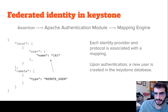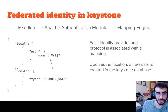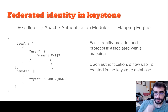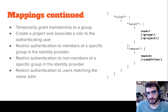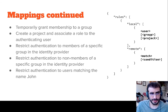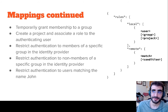Upon authentication, a new user is created in the Keystone database. We can see a form of a mapping which translates the remote user attribute into the name of the user. Mappings allow operators to do many things: they allow you to temporarily grant membership to a group for an authenticating user, create a project and associate a role to the authenticating user, and restrict authentication to specific users based on a matching condition — for example, blocking a specific user like John from accessing your cloud.